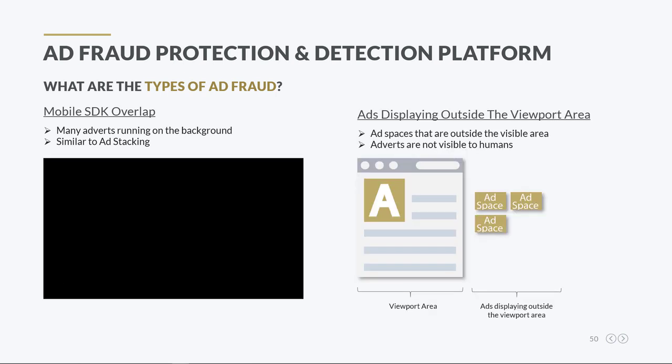Viewport is the user's visible area of a web page. Dishonest publishers can create and place ad spaces outside the viewport area. In this case, whenever a page loads, many adverts could load outside the viewport area without being visible to humans. Since those ad impressions are considered valid, advertisers have to pay for them.